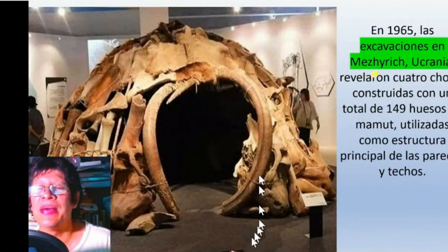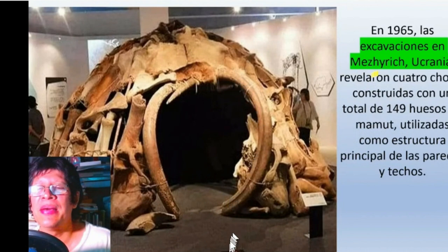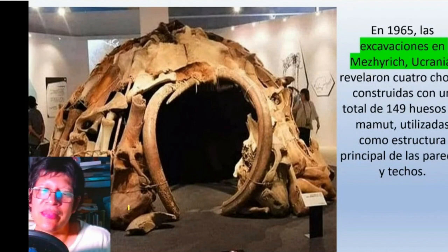This is a settlement that was discovered in Ukraine. It was frozen and was discovered in 1965, located in Mezhyrich. It was built with bones of mammoths. This is the kind of evidence that archaeologists look for, which helped them explain how the American continent was populated and where human beings come from.